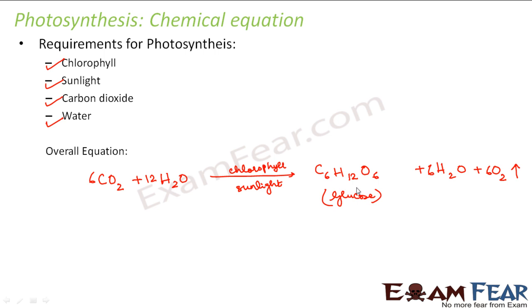Where is the starch stored? It is stored in the leaves. But plants have many other parts as well — fruits, stems, branches — and each part of the plant needs food. Starch is carried to the different parts of the plant through a vascular tissue called phloem, which we studied in the lesson on tissues in class 9th. We will discuss that again when we talk about transportation.